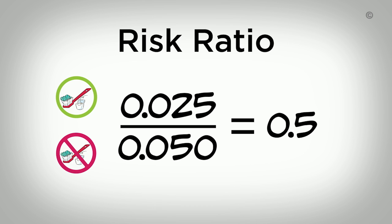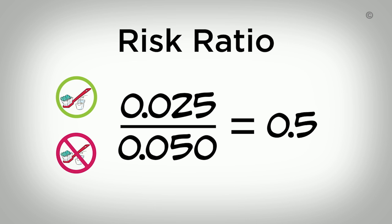Now that we have calculated the relative risk, we need to interpret it. An RR of 1 would mean the risk of dental caries is no different for children who receive education than for children who do not. An RR below 1 would mean children who receive the education have a lower risk of dental caries than those who do not. And an RR above 1 would mean children who receive education have a greater risk of dental caries than those who do not. In our example, the RR is 0.5, which is less than 1, telling us that children who receive the education are at a lower risk for dental caries.